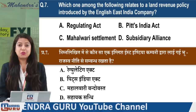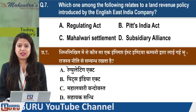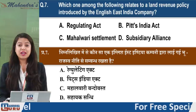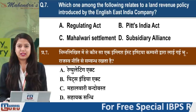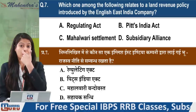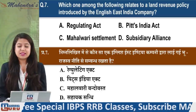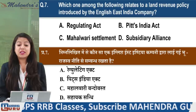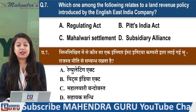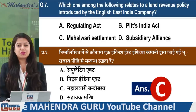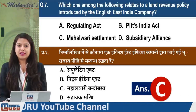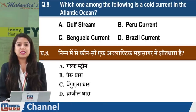Next question: Which one of the following relates to the land revenue policy introduced by the English East India Company? Options: Regulating Act, Pitt's India Act, Mahalwari Settlement, or Subsidiary Alliance. The right answer is option 3 - Mahalwari Settlement.